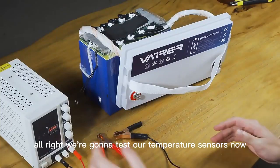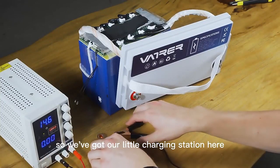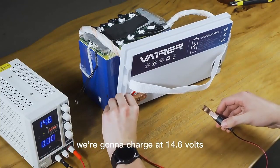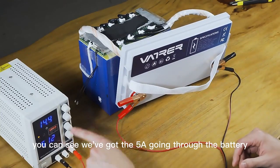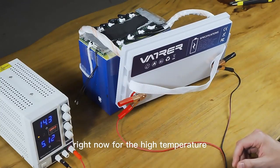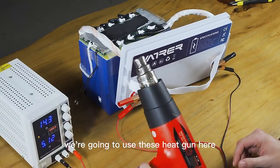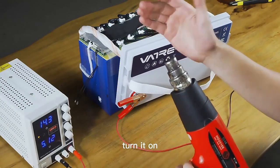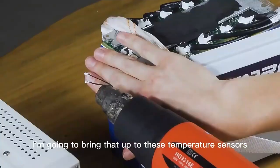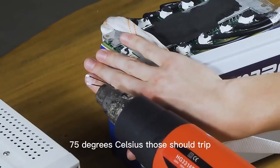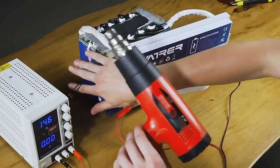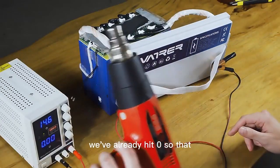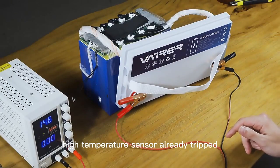All right, we're going to test our temperature sensors now. So we've got our little charging station here. We're going to charge at 14.6 volts, connect our positive and our negative. And you can see we've got the five amps going through the battery right now. For the high temperature, we're going to use this heat gun here. Turn it on. I'm going to bring that up to these temperature sensors. Once we hit about 75 degrees Celsius, those should trip and that amp meter should drop. There it goes. We've already hit zero. So that high temperature sensor already tripped.